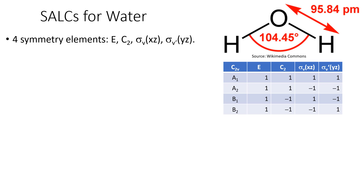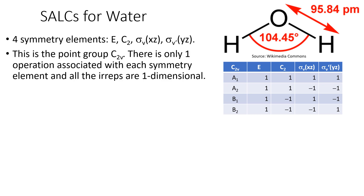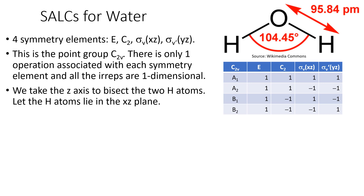Hello and welcome to this 14th session on symmetry and chemistry. At the end of last time I left you with a problem to work out the symmetry adapted linear combinations for water. So just quickly to take you through the problem again, we've got the structure of water there, we've got the C2V character table, we've got the symmetry elements, and we mentioned how these irreps are all entirely just one-dimensional.